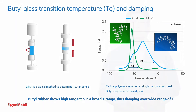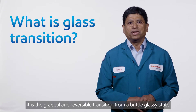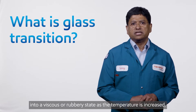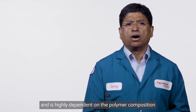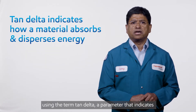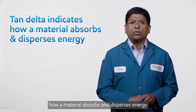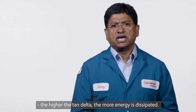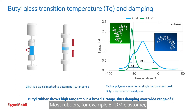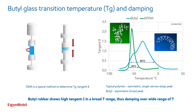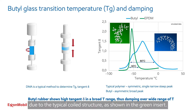So what is glass transition? It is the gradual and reversible transition from a brittle, glassy state into a viscous or rubbery state as the temperature is increased. In most polymers, this transition occurs over a wide range of temperatures and is highly dependent on the polymer composition along the backbone. This transition can be quantified using the term tan delta, a parameter that indicates how a material absorbs and disperses energy. The higher the tan delta, the more energy is dissipated. The peak tan delta value is often used to define the glass transition temperature. Now take a look at the tan delta plot shown on the right-hand side. Most rubbers, for example, EPDM elastomer shown using the green curve, show a symmetric shape with a single narrow peak, about 30 degrees Celsius wide, due to the typical coiled structure as shown in the green insert.